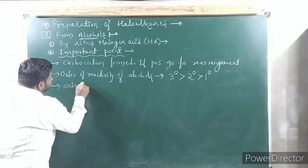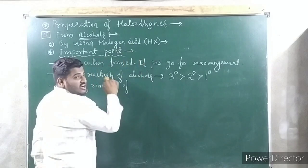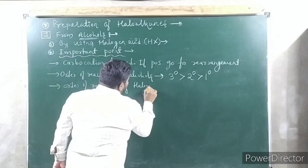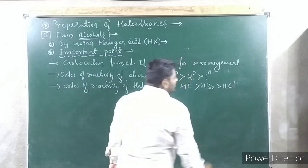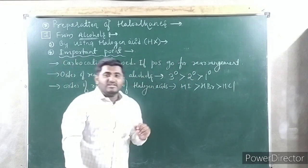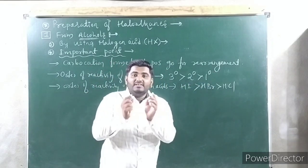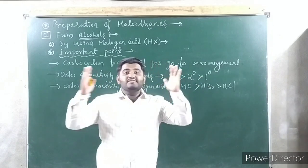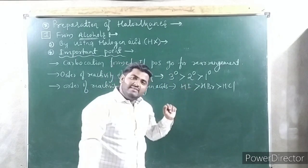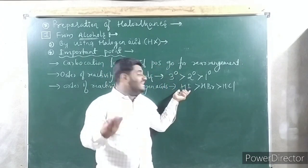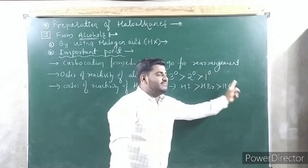Next point: order of reactivity of halogen acids (HX). HI > HBr > HCl. Why? Because in HI, the bond dissociation energy is very less — I is larger in size, H is smaller in size, so this bond can be easily broken. We want H⁺, and HI gives H⁺ more easily compared to others. Therefore, HI is more reactive than HBr than HCl.